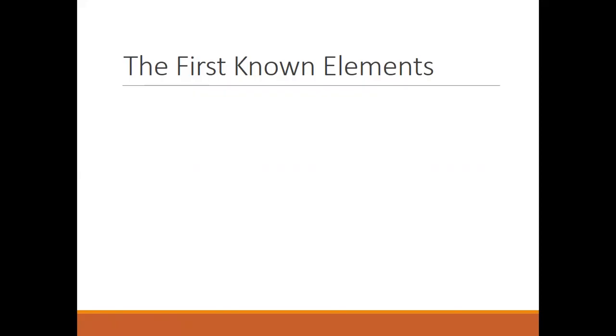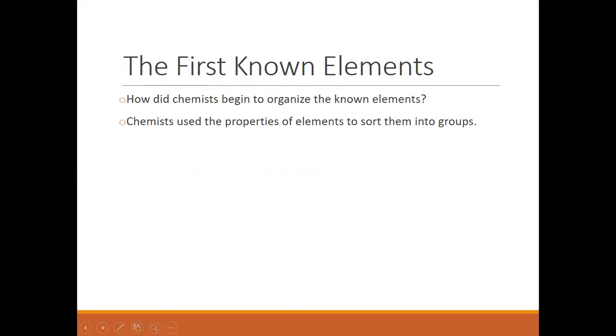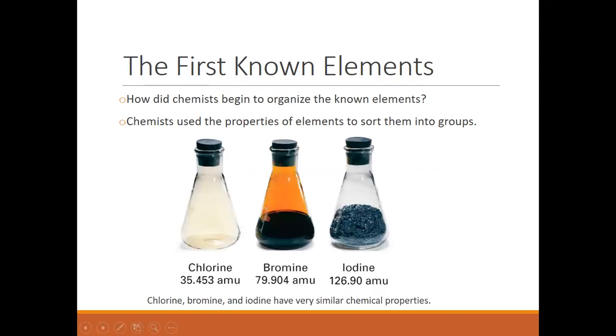So to get started, the first known elements. This all starts back in the 1700s. There was about 30 elements that were known. They were pretty much the normal, everyday, run-of-the-mill elements like oxygen and chlorine and gold, silver, copper.